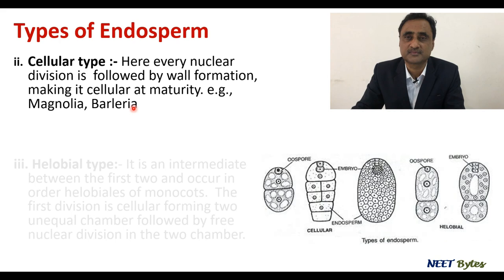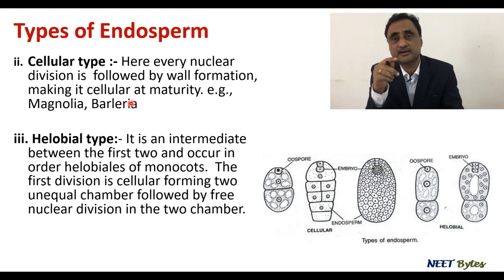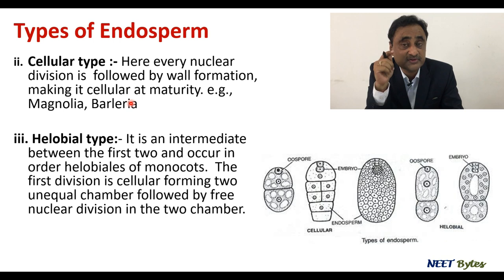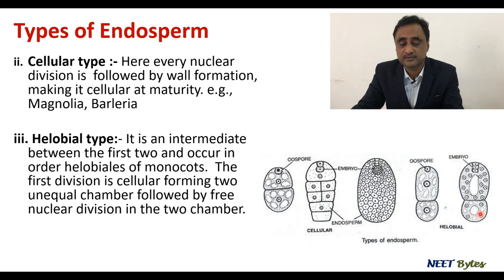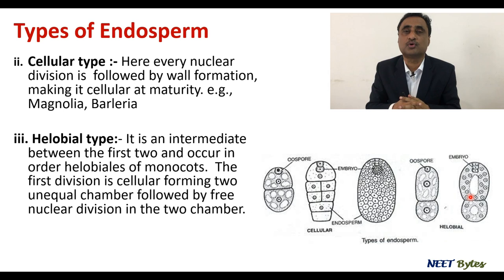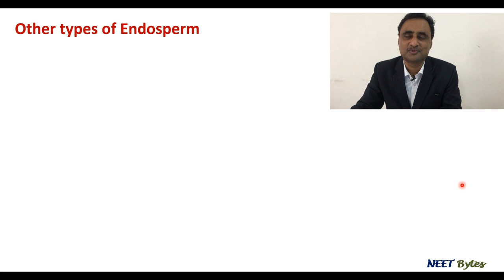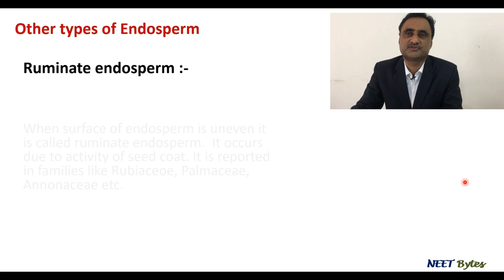There is one more type — the helobial type. This is found in the order Helobiales of the Poaceae family. Here, it is a combination of cellular and nuclear types. The first division is cellular, dividing into two cells, and within those two cells there is free nuclear division. Looking at the diagram, the first division is cellular, and then in both cells there are free nuclear divisions. The final structure remains the same; these types are differentiated only on the mode of formation.